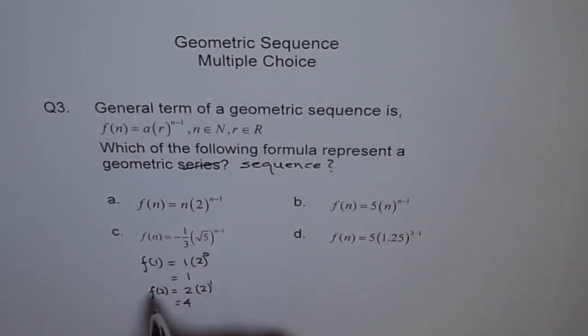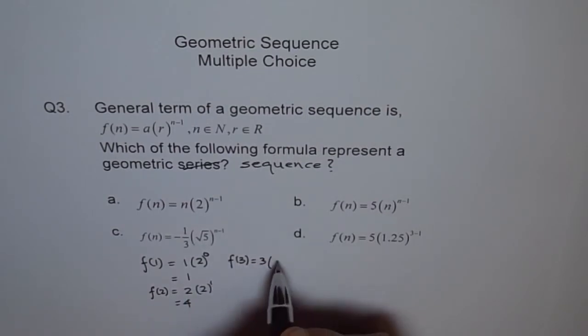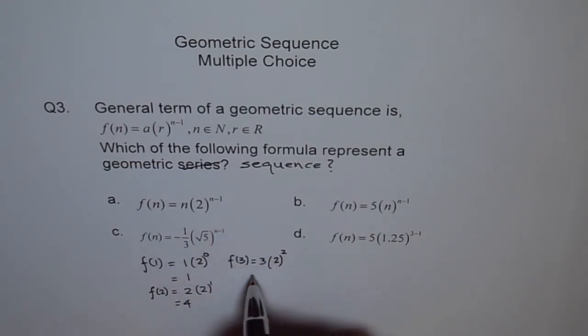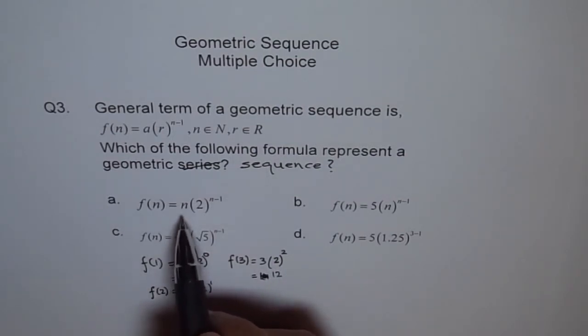And how about f(3)? f(3) will become, this number will become 3, and 2 to the power of (3 minus 1) is 2, times 4, it becomes 12. Now we have 1, 4, 12. From 1 to 4, the ratio is 4. And from 4 to 12, the ratio is times 3. Do you see? It does not follow. So n has to be a constant, not a variable.